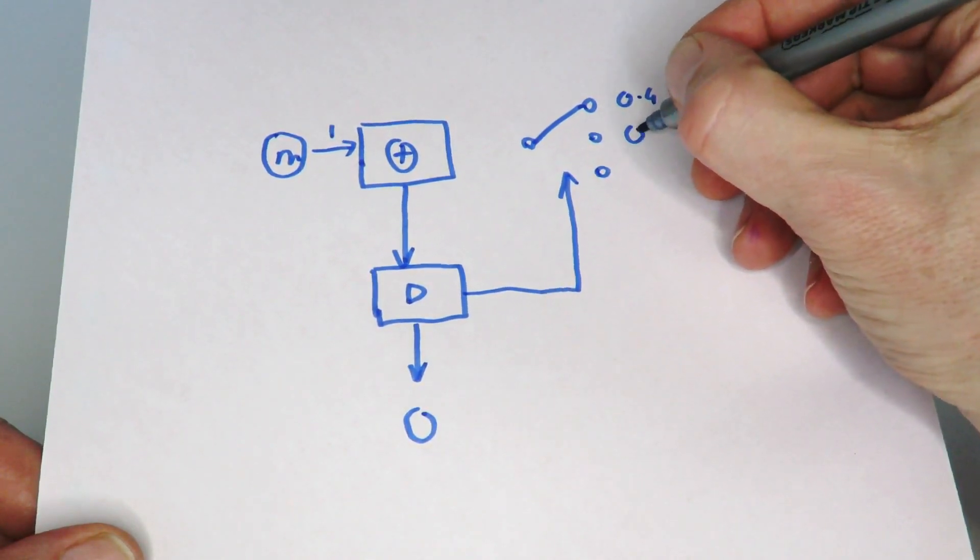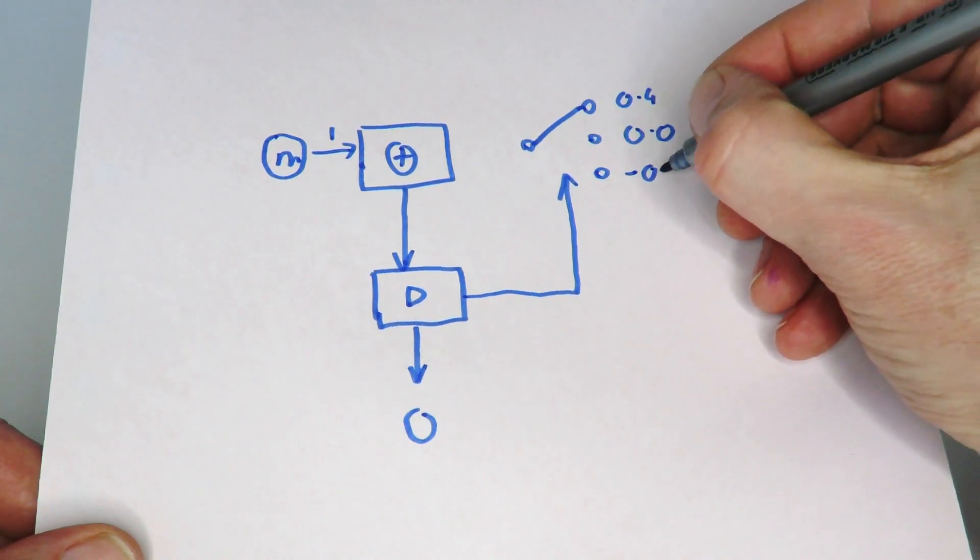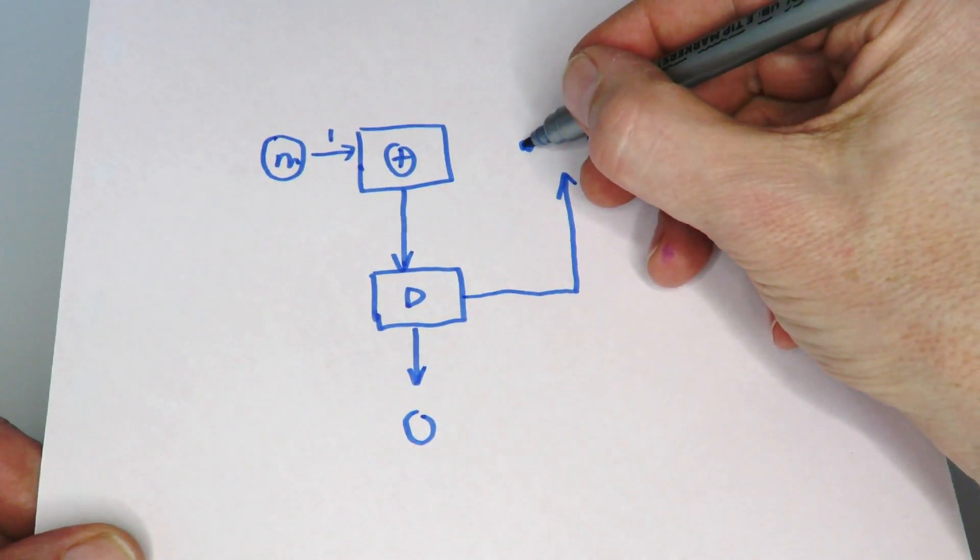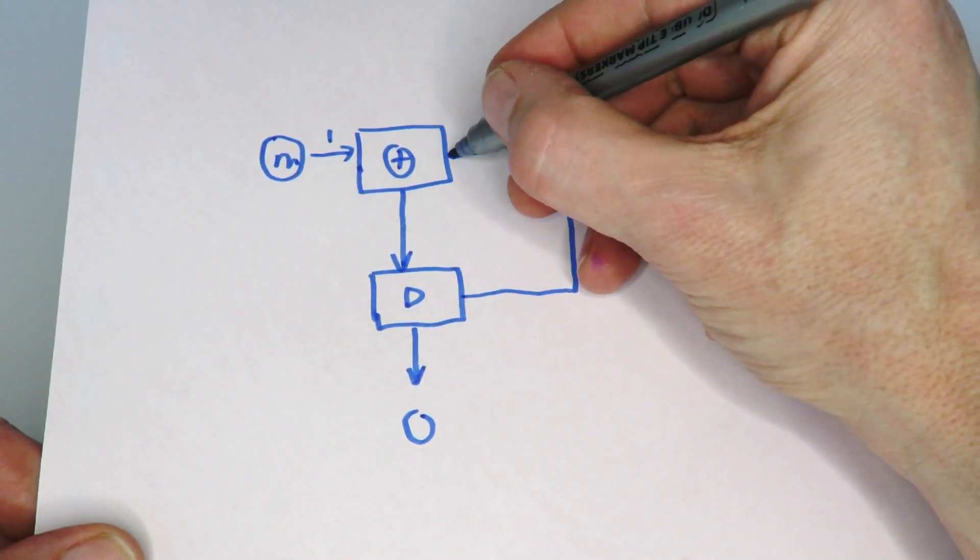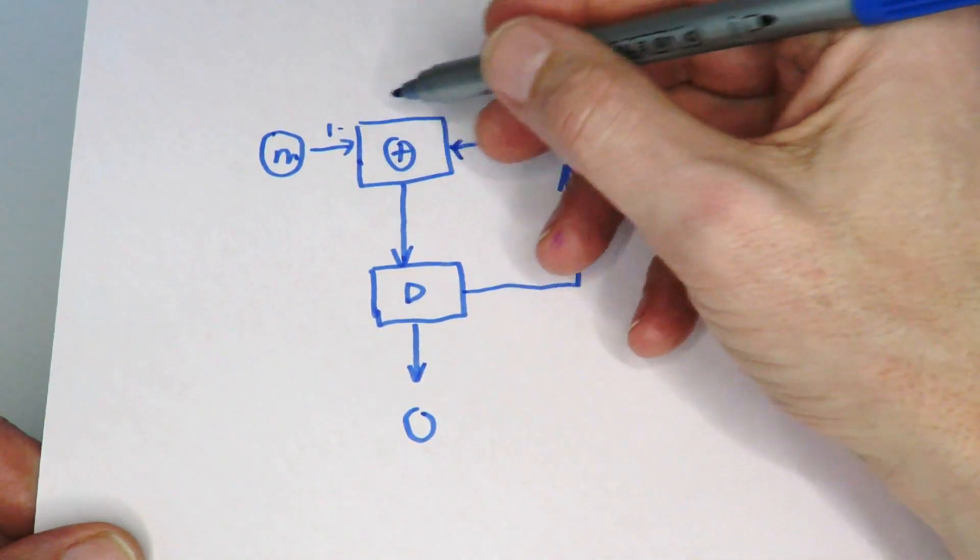Then the neutral would just be zero, and then the third speed would be something like minus 0.4. Then that would drive back into that summing differential so that the speed selector would add on to that speed one.